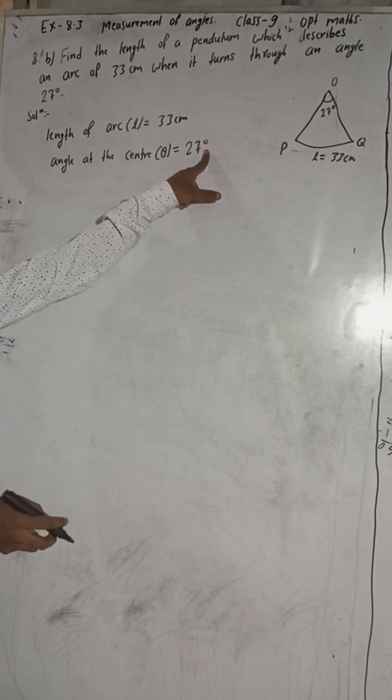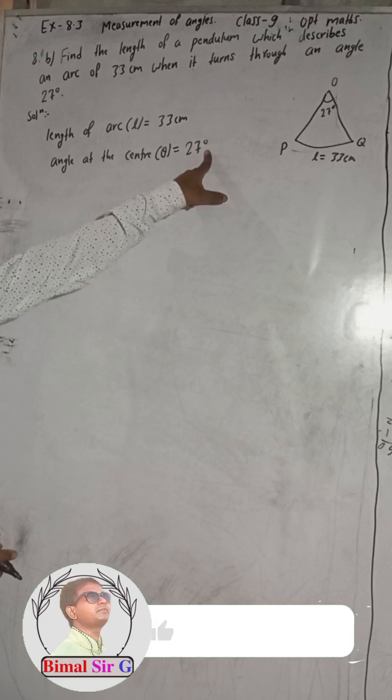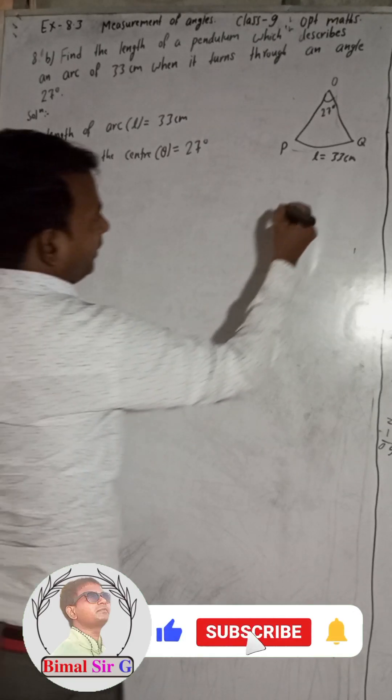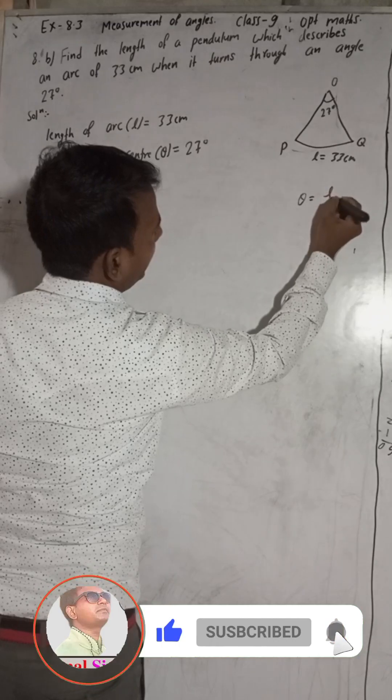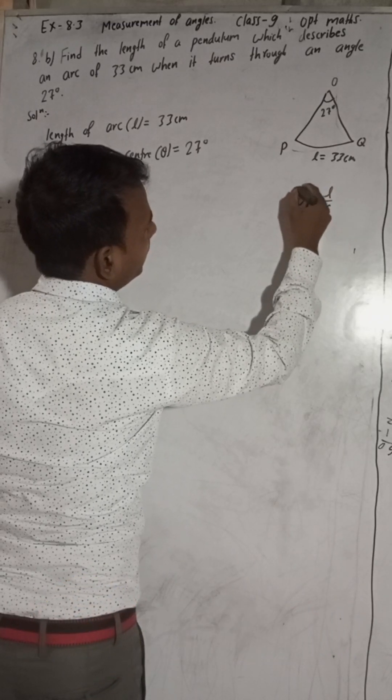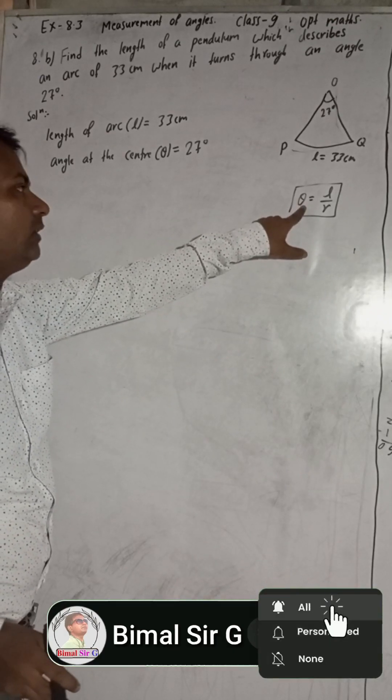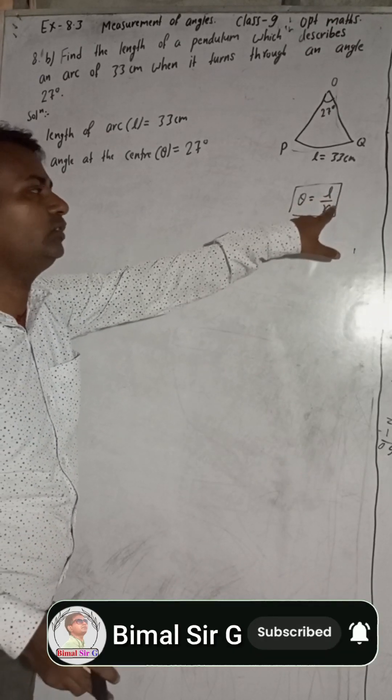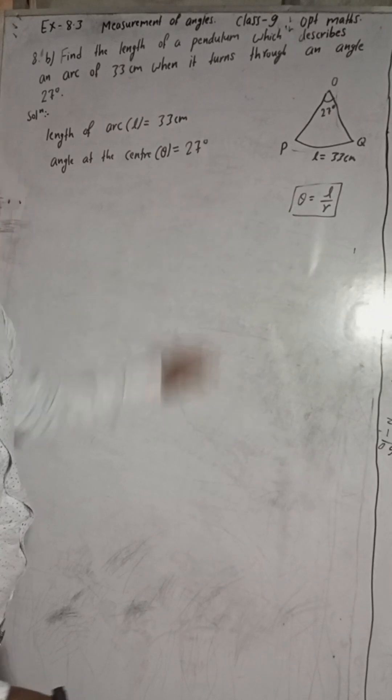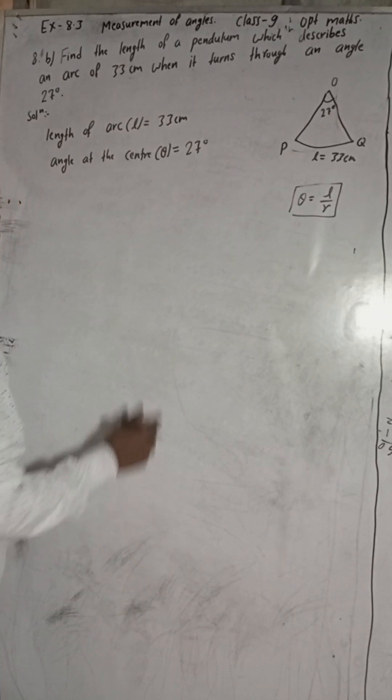Because in the formula, we have formula for theta is L by R. This is the formula. And this theta is the center angle in radian. This length is in centimeter. So we have to change this 27 degrees into radian.